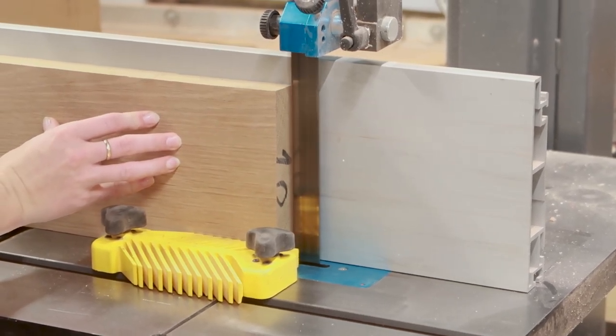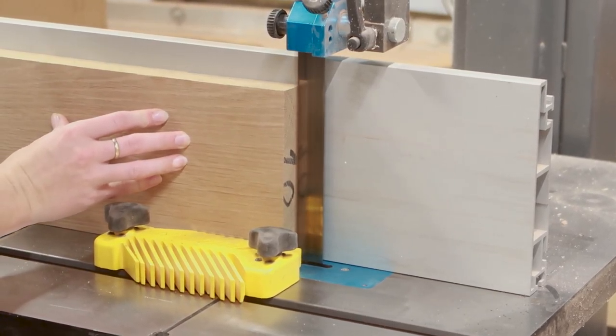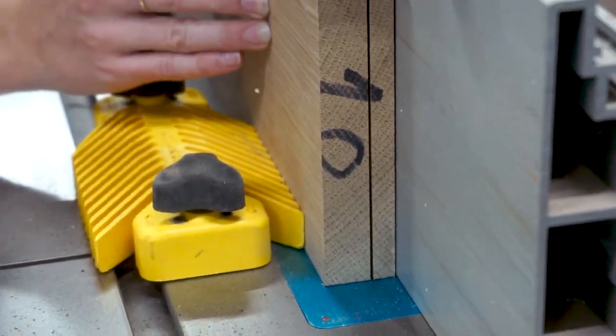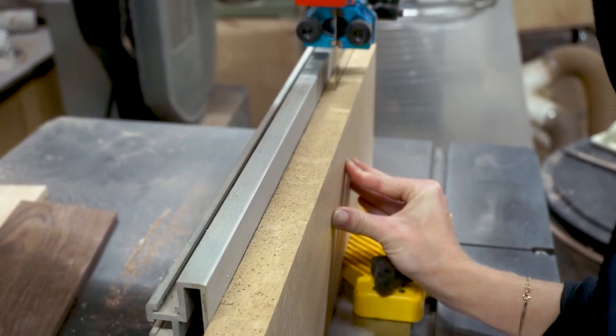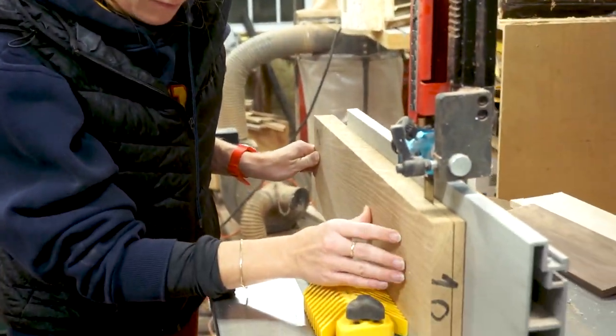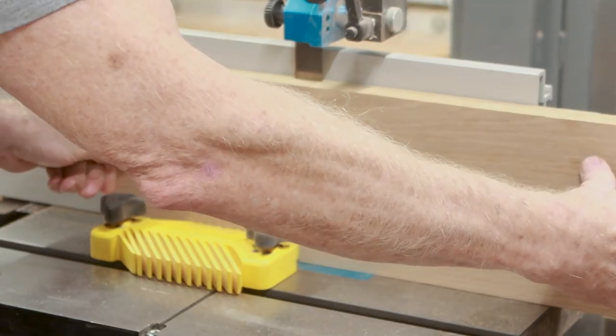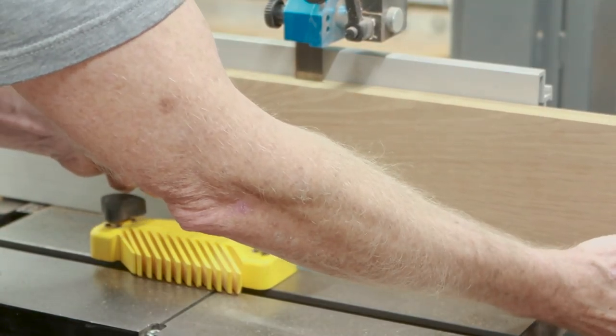We're going to make the book cover out of a leftover piece of quarter sawn white oak. This is leftover from a door project that Kat and I worked on and we're going to cut this to be about a quarter of an inch thick and ultimately the book cover will be about an eighth of an inch thick when we're all done. Kat found it a little slow going so she asked me to finish up.